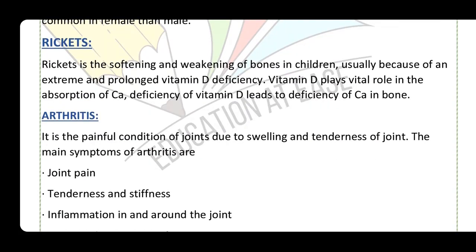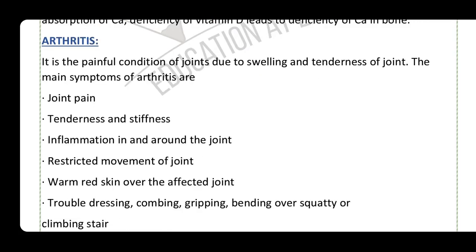Rickets is the softening and weakening of bones in children due to extreme and prolonged Vitamin D deficiency. Vitamin D plays a role in helping the body absorb calcium. We get Vitamin D from sunlight, and calcium from dairy products and food. Without Vitamin D, calcium cannot be absorbed properly.